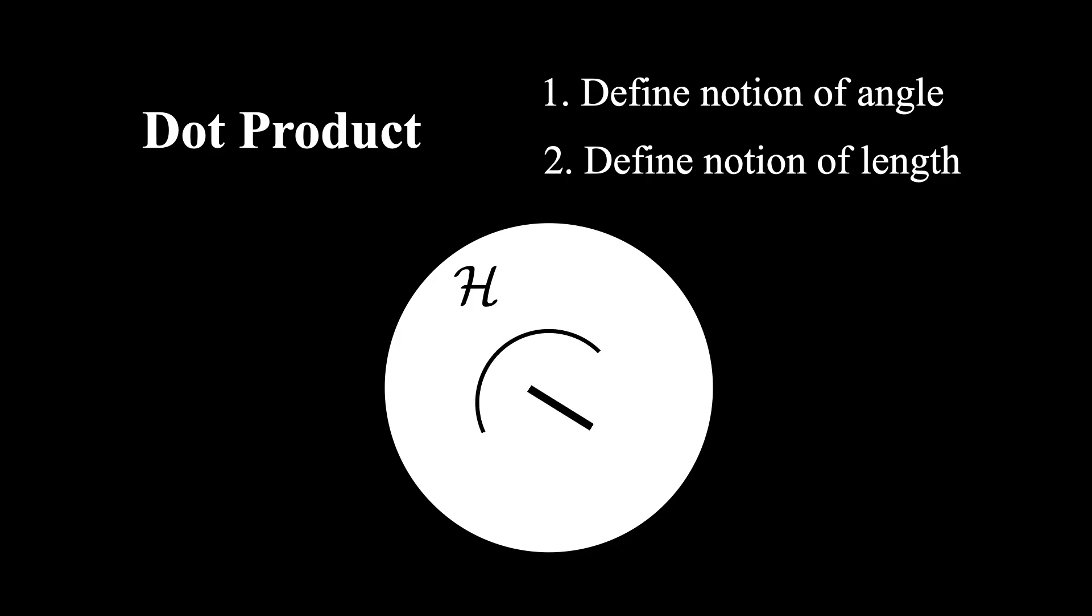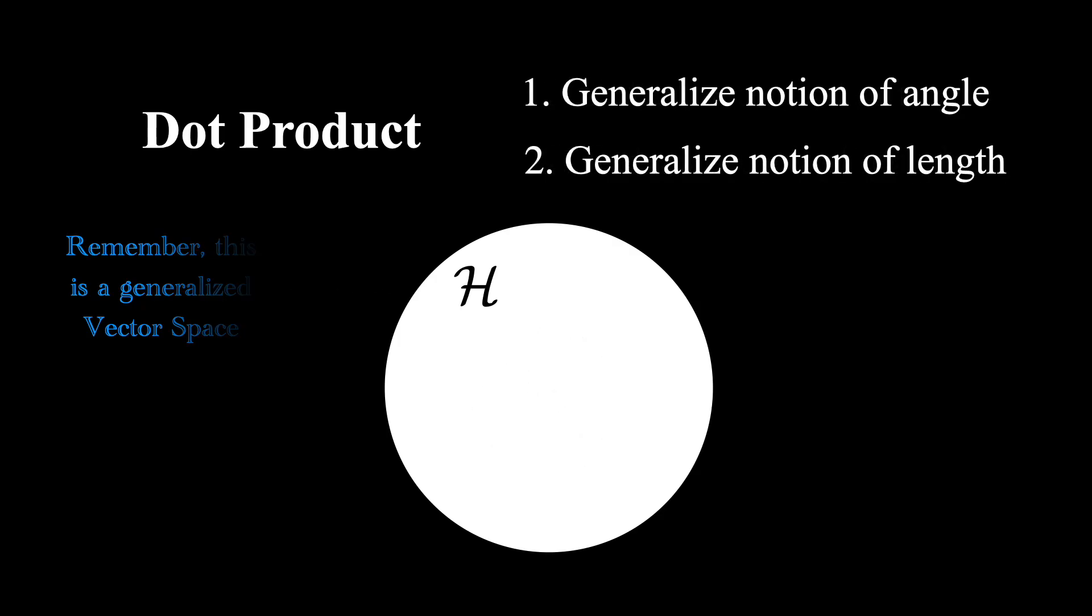however it becomes absolutely necessary when considering the Hilbert space that quantum mechanics operates in. Recall that the vectors in quantum mechanics are not vectors living in 3D space. Rather, they are abstract vectors living in a Hilbert space, so we cannot just use the dot product. However, it would still be very useful if we could generalize both the notions of angles between vectors as well as the lengths of vectors.